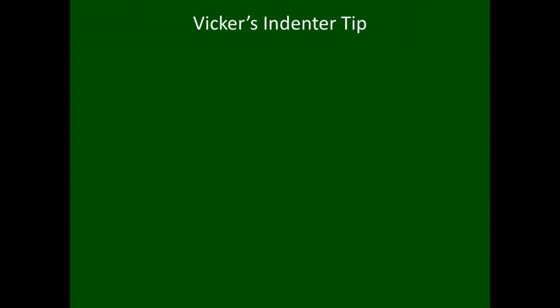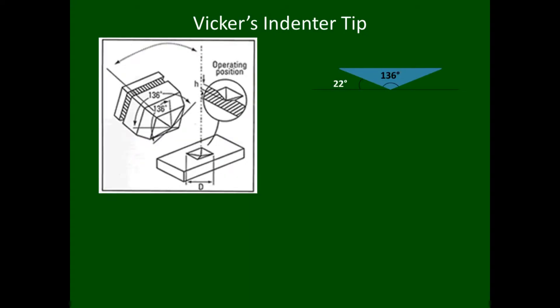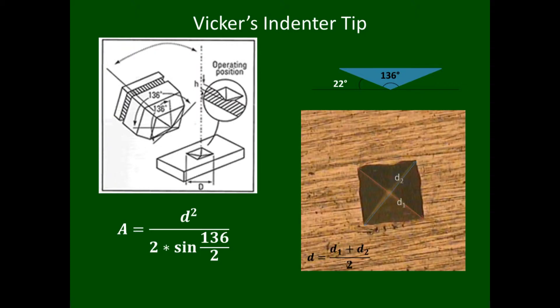For macro and micro scale hardness testing, a common method is the Vickers method. In this method, a Vickers tip is used to apply force to the material — we see the Vickers tip here. In Vickers measurement, the contact area of the indenter is used for calculations. We see the equation for the contact area here. The value for d is determined by optically observing the resultant indent, measuring the values for d1 and d2, and averaging the two, as we can see in this optical image for the typical Vickers indent.